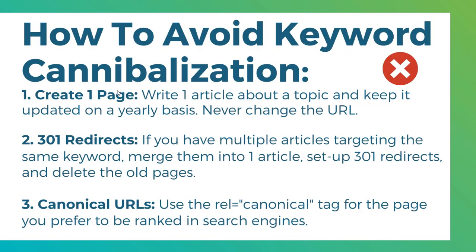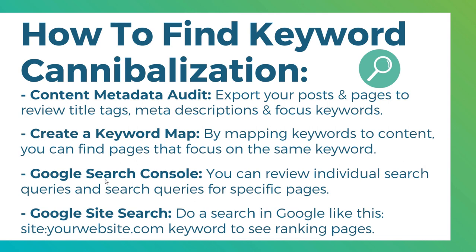Now for finding keyword cannibalization — the four different ways I like to use: first, a content metadata audit, where you're exporting your posts and pages and reviewing title tags, meta descriptions, and focus keywords set for those pages. Second, creating a keyword content map — mapping individual keywords to the pages on your website. Third, using Google Search Console to review individual search terms and queries for specific pages. And fourth, doing a Google site search: type 'site:' followed by your website and then a keyword.